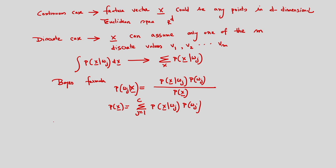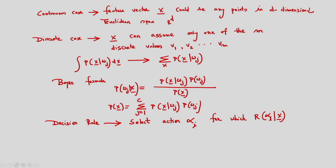Based on the risk, the decision rule is: select action alpha_i for which the conditional risk R(alpha_i | x) is minimum. So, select the action alpha_i for which R(alpha_i | x) is minimum — this is the decision rule.